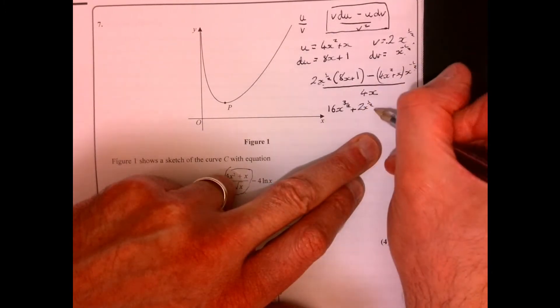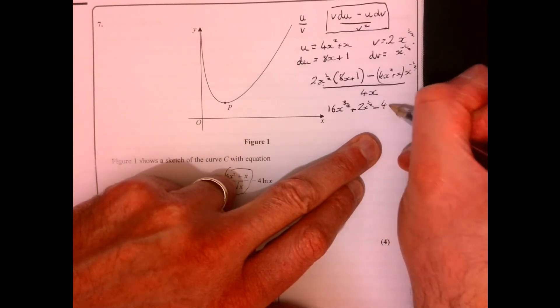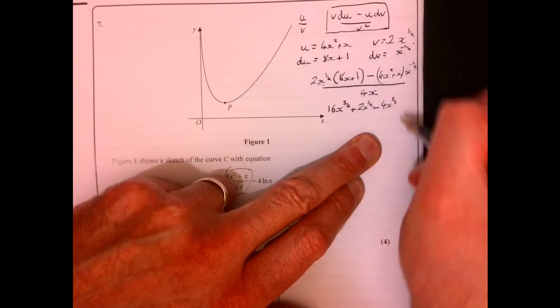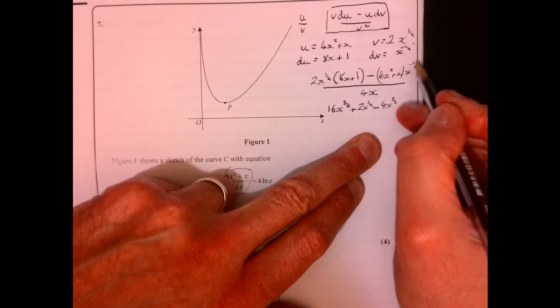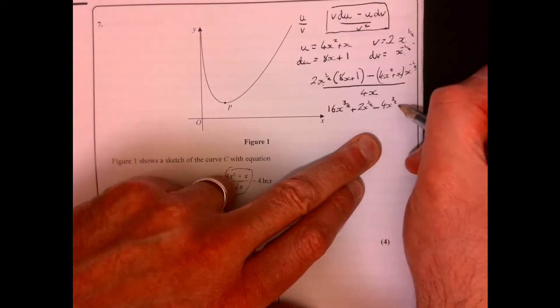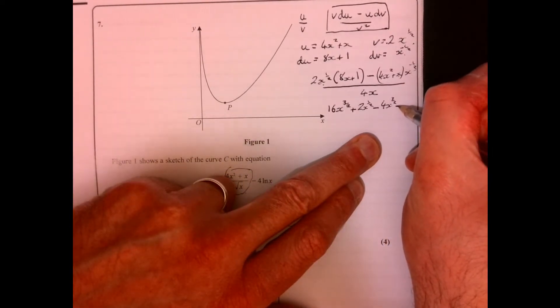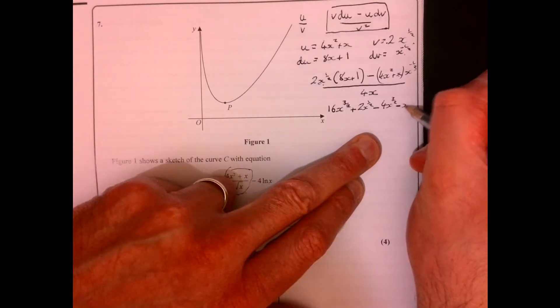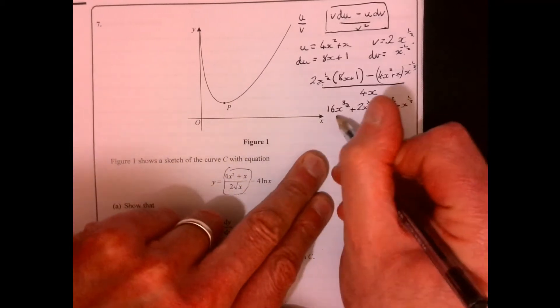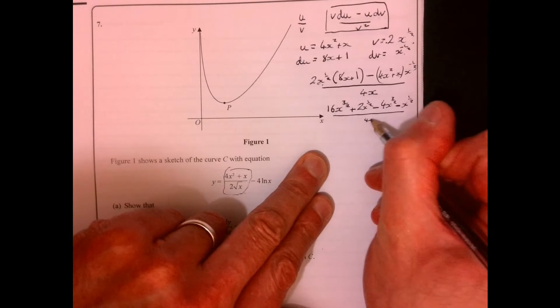And this one times this one, so we're gonna have minus 4x to the 3/2. And then this one times this one, so we're also going to have minus x to the half. And then all that's over 4x.